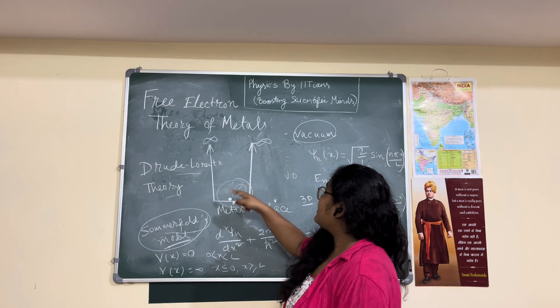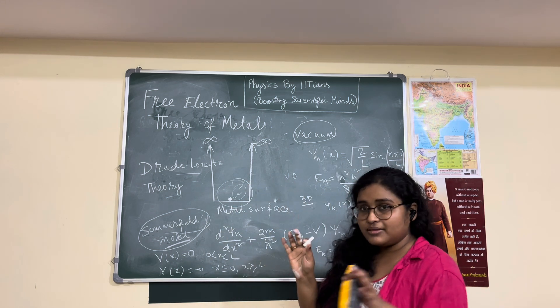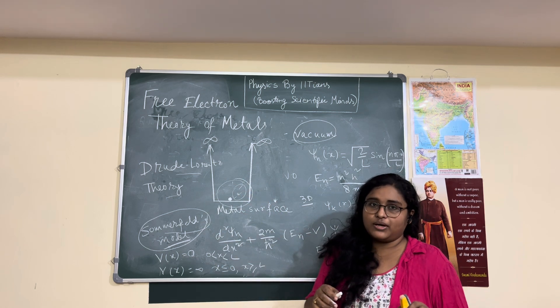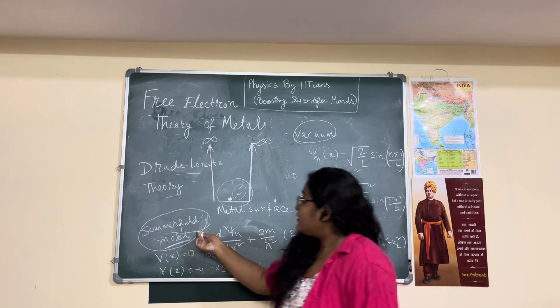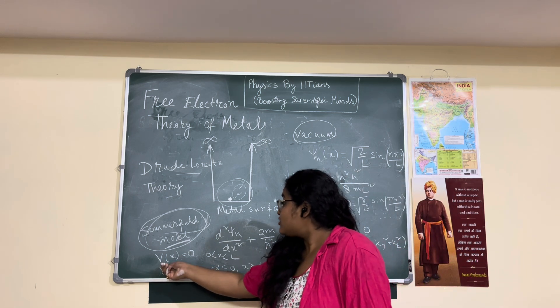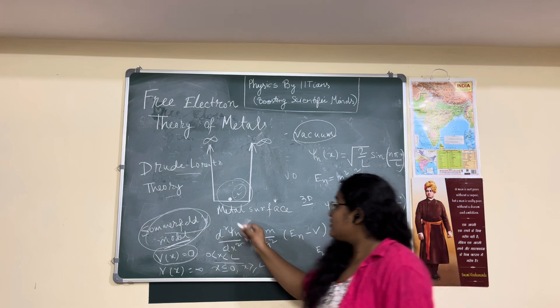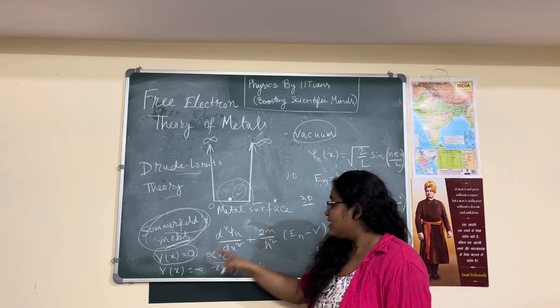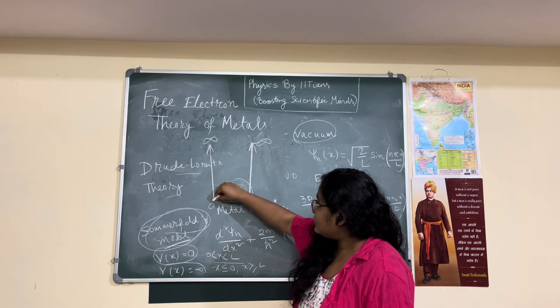So if we first treat it as a one-dimensional potential box, Sommerfeld said let's say we have an infinite potential box as the metal and the electron is bound inside the metallic one-dimensional potential box. To treat this model quantum mechanically, he took the potential V of X equals 0 for X from 0 to L, and V equals infinity for X less than or greater than L.